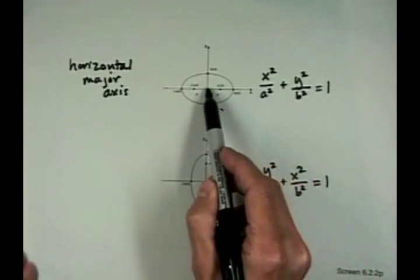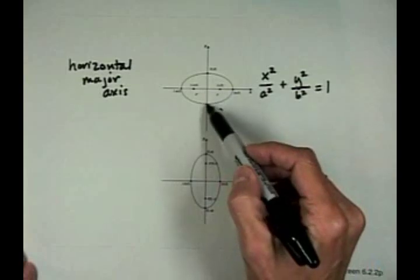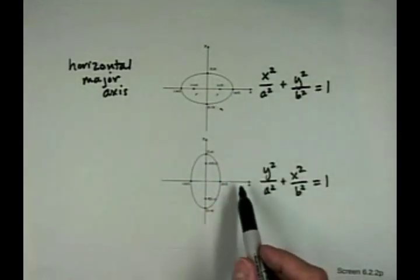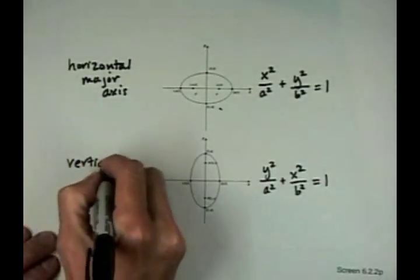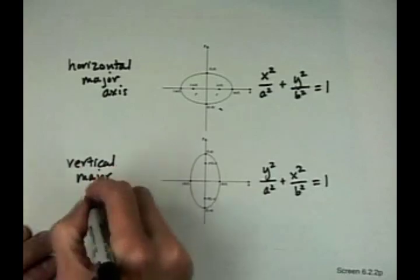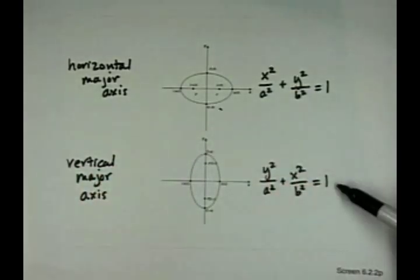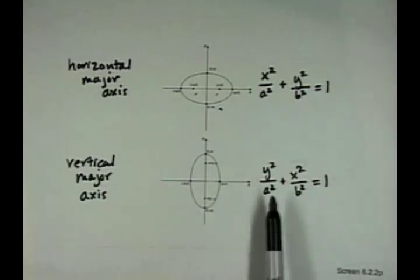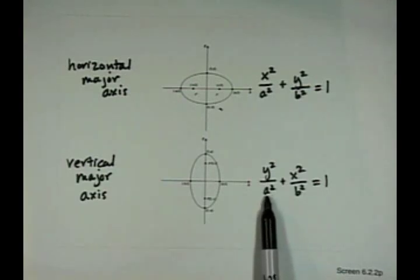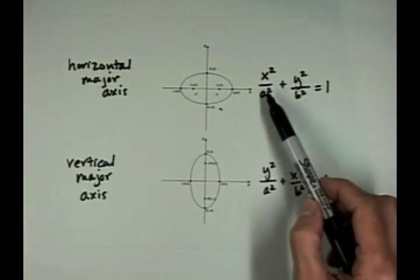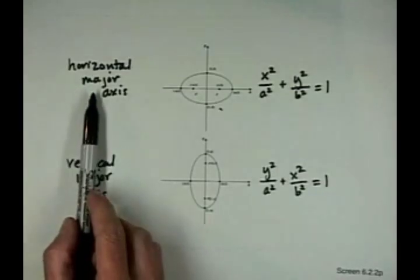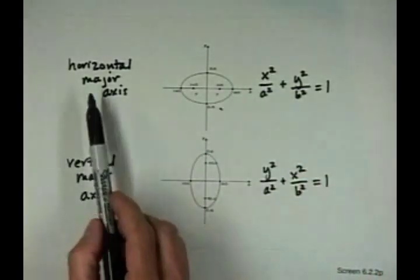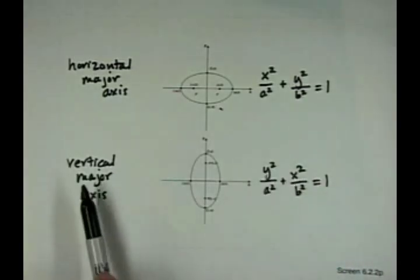Here, a is half the major axis and b is half the minor or short axis. The second ellipse has a vertical major axis — its long axis is vertical. Its equation is y squared over a squared plus x squared over b squared equals one. The larger denominator indicates the direction of the major axis: big denominator under x means horizontal major axis; big denominator under y means vertical major axis.